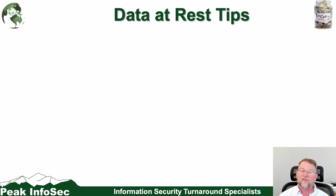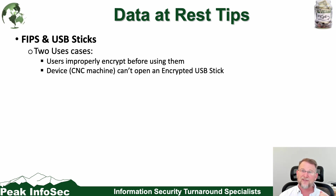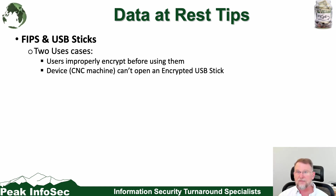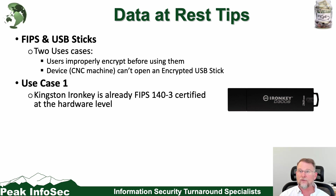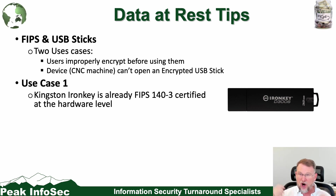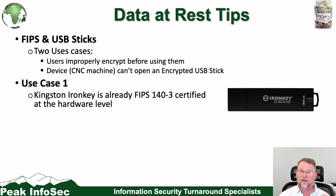Now let's talk data at rest tips, starting with USB sticks. Users notoriously copy data to USB sticks without encrypting them. The strong recommendation is Kingston IronKeys — they're FIPS validated out of the box, encrypted out of the box, and can be centrally managed. It takes the user out of the loop through hardware-driven encryption. If someone tampers with an IronKey, it will destroy itself in the process — a perfect way to securely move CUI.